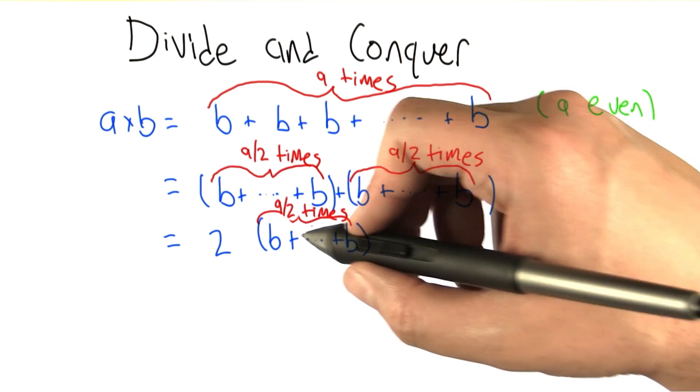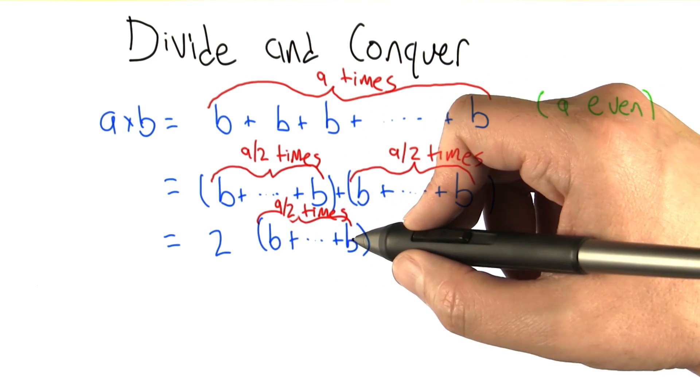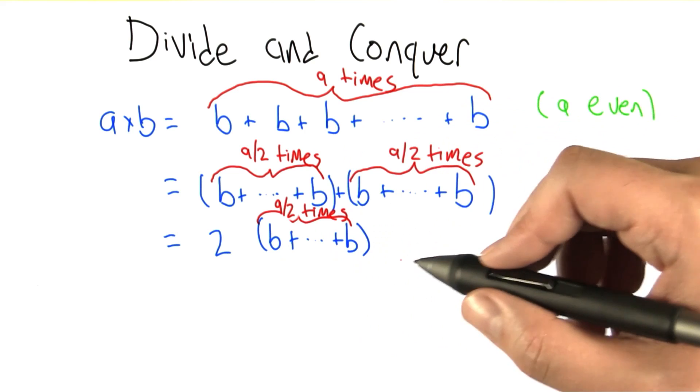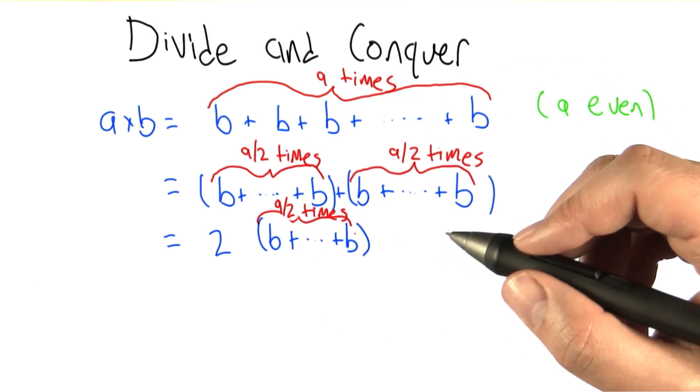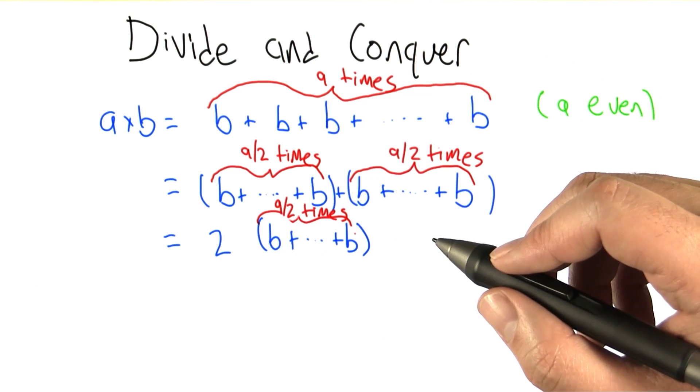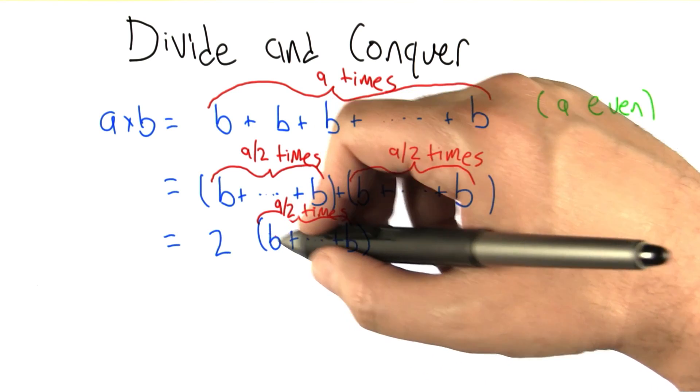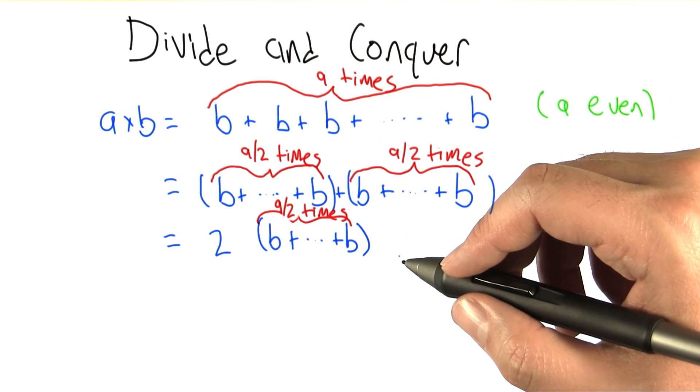So really, if we're doing this calculation, we could just compute it once, b added to itself a over 2 times, and then just double the result that we get. Doing this calculation here is basically now repeating the same operation over again. So each time we're doing part of the sum here, we're actually saving ourselves a tremendous amount of effort.